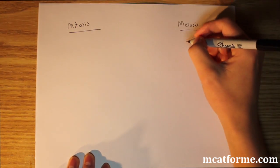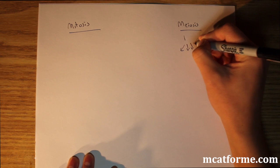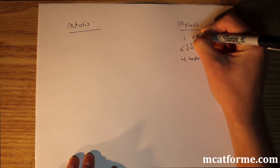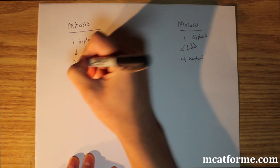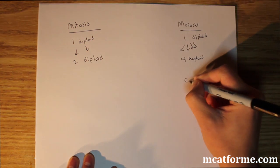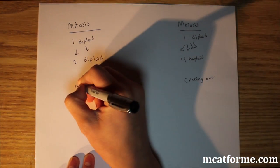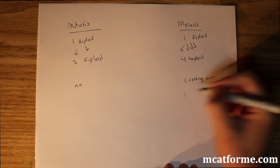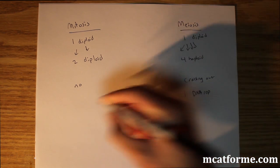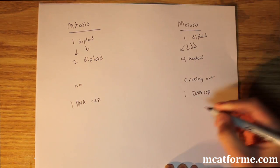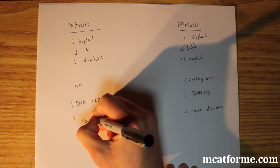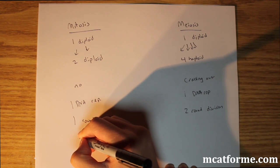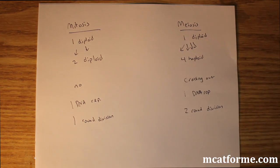Comparing the two: in meiosis, we start with one diploid and make four haploids; in mitosis, we start with one diploid and make two diploids. In meiosis, we have crossing over; in mitosis, we don't. Both have one round of DNA replication, but in meiosis there are two rounds of division, versus only one in mitosis. Mitosis makes exact same copies; meiosis is for making gametes.